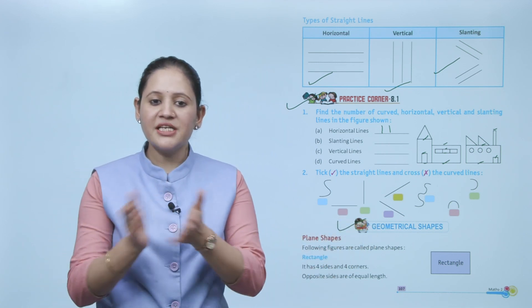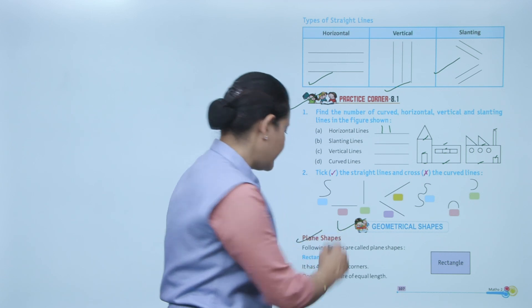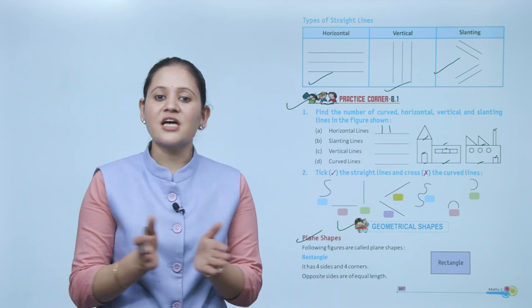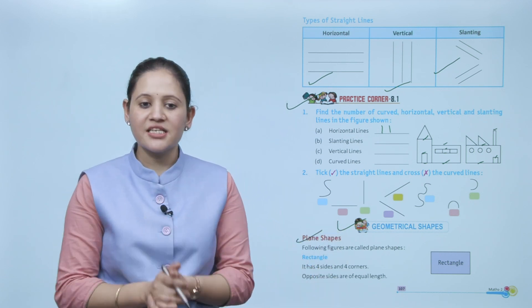First we'll take plane shapes. The following figures are called plane shapes. First is rectangle.